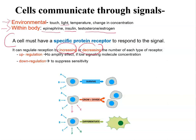Cells can regulate the level of reception by increasing or decreasing the number of receptors they have. In upregulation, when they're trying to amplify the effect — usually experiencing low signaling molecule concentration — they're going to make more proteins and embed them in the membrane. So if there are just a few signaling molecules at low concentration, the cell will produce more receptor proteins embedded in its membrane to ensure that every single signaling molecule is picked up.